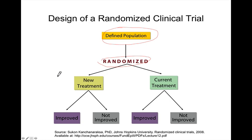The subjects are then placed into one of two groups. One group receives a new treatment — something we are trying to find out if it works better than what is currently used to treat the condition. The subjects are followed over time, and we determine at the end of an appropriate time period whether or not people have improved in each group. We can then develop measures of association, typically a relative risk, that tells us whether the new treatment was effective.